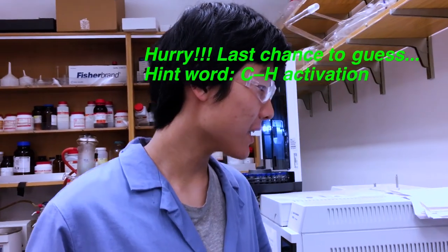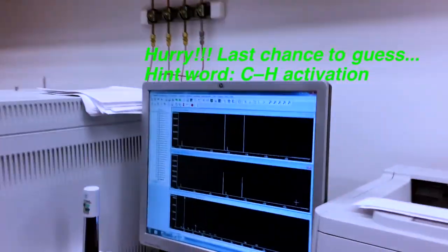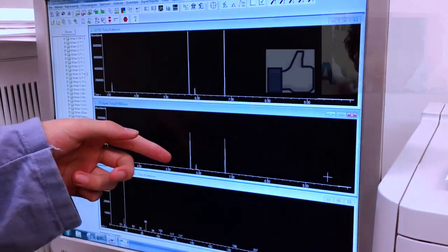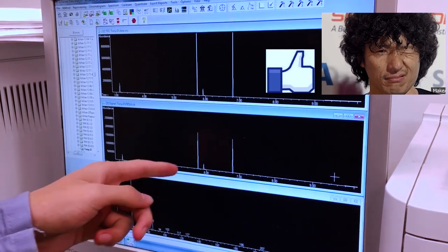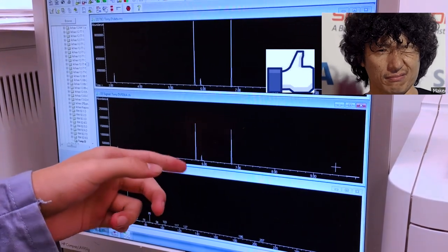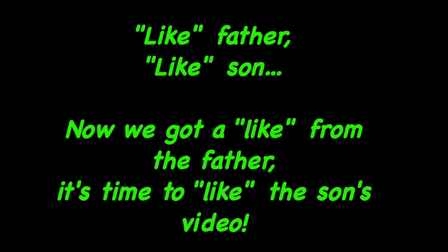Now I'm going to show you how clean the reaction is on the GC. Over here we have the Bpin, and here we have the NHPI, and then this is our desired product here. As you can see, it's pretty clean.